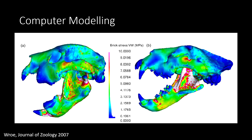There are many different computer modeling techniques that can be done with 3D digital fossils. This example is called finite element analysis, essentially measuring the stress when these two different skulls bite down, comparing the thylacoleo — the marsupial lion on the left — and a modern African lion on the right.